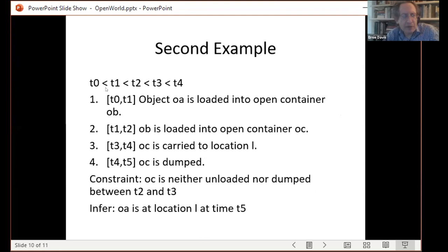More complicated example. Object OA is loaded into OB, OB is loaded into OC, OC is carried to location L, and then OC is dumped at location L. And you have the constraints that between T2 and T3, OC is neither unloaded nor dumped. And you assume that only one action happens at a time in this model. And therefore, we want to assume that when OC is dumped, OA is now at, you know, OA was carried along with OB and OC and it's now at location L.